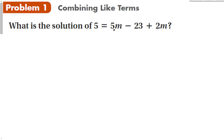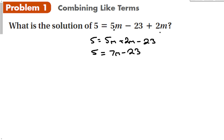So we can take the 5m and the 2m, and if we really wanted to, we could rewrite this as 5m plus 2m minus 23 using the commutative property. We will combine the like terms of 5m plus 2m to give me 7m minus 23. Now this should look like equations we dealt with in the last section. So the next thing we're going to do is add the 23 to both sides.